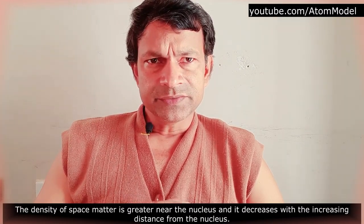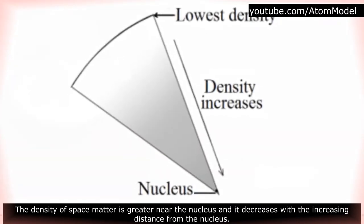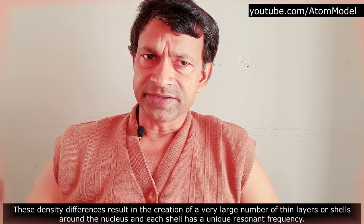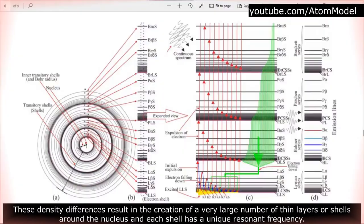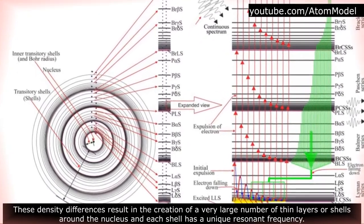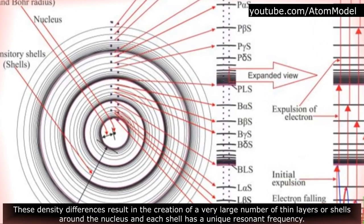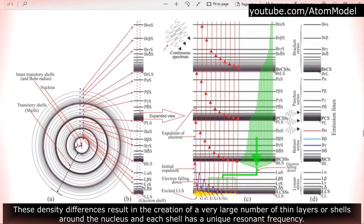The density of space matter is greater near the nucleus as it decreases with increasing distance from the nucleus. These density differences result in the creation of a very large number of thin layers or shells around the nucleus, and each shell has a unique resonant frequency.